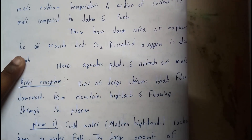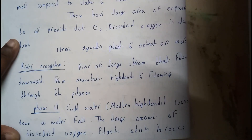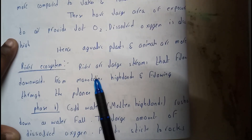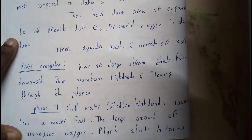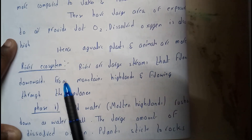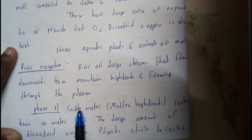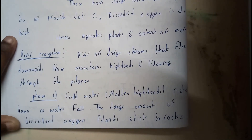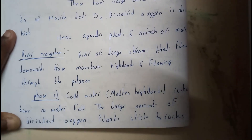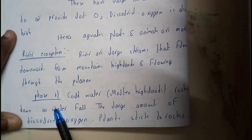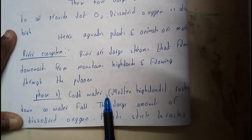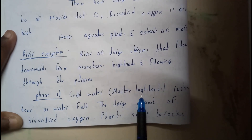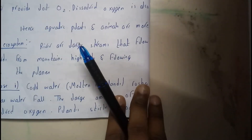Now let's go through river ecosystem. Rivers are nothing but larger streams — they are larger than streams and flow down from mountains and hills, then through the plains. River ecosystem has three phases.